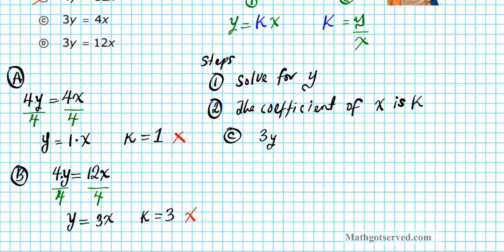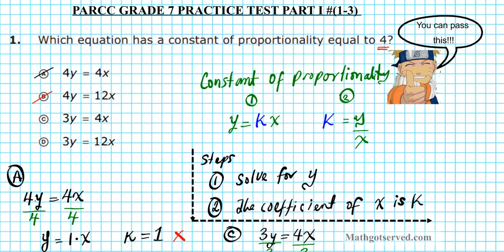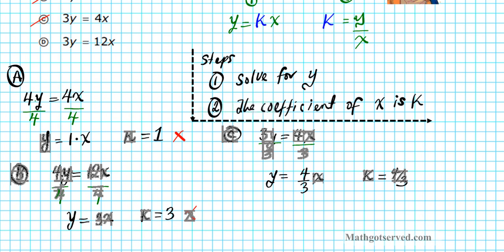Now let's move on to option c. We have 3y equals 4x. We carry out the same steps: solve for y first, then extract the coefficient of x. We divide both sides by 3, because that's what's in front of y. The 3s divide out and we have y equals 4 thirds x. The constant of proportionality k is 4 thirds. That's not what we want — we need 4 — so option c is not the answer.